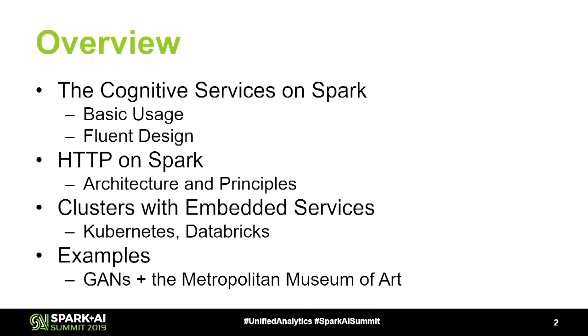The basic overview is that we'll talk about what the Cognitive Services on Spark are, how to use them in a basic sense, and then how to use them in an advanced sense. Then we'll talk about the more general framework that this is all built on — HTTP on Spark — which is the full integration between Spark and the HTTP protocol. We'll talk about clusters with embedded cognitive services to avoid cloud latencies. And finally, we'll show how we used this to create a fun app partnered with the Metropolitan Museum of Art, exploring a deep art GAN and the Met's actual collection.